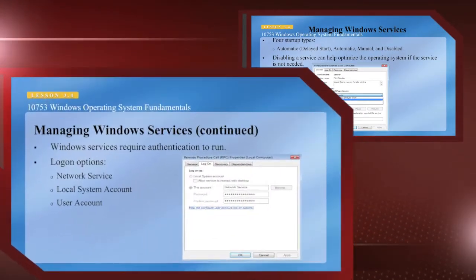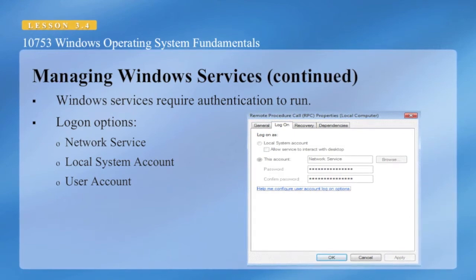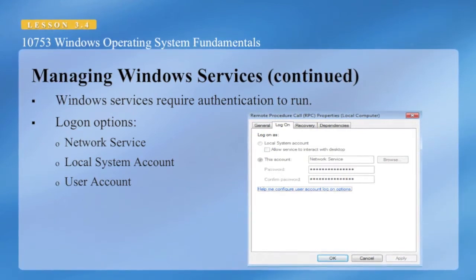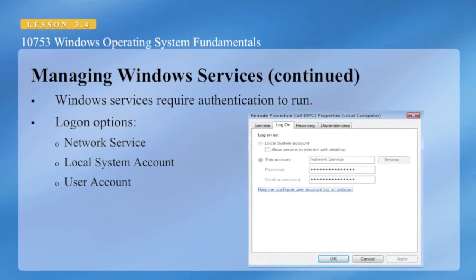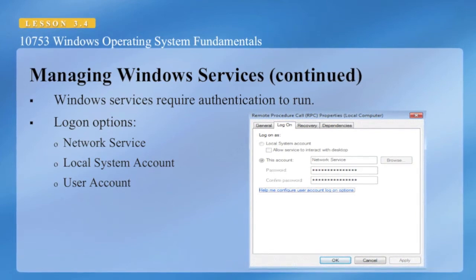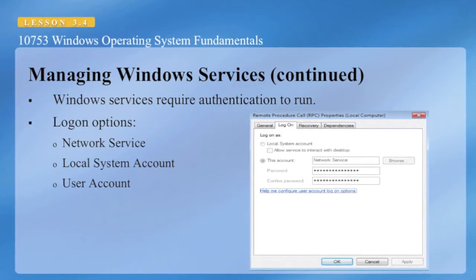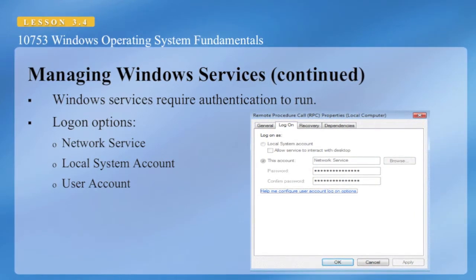While managing Windows Services, keep in mind that services require authentication to run. There are different logon options: you can run as a network service, use a local system account, or use a user account. If you install third-party software, it typically creates a service and the administrator is prompted to provide an account with authority to log on as a service.